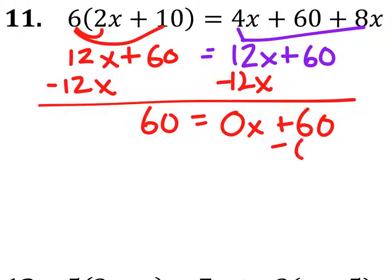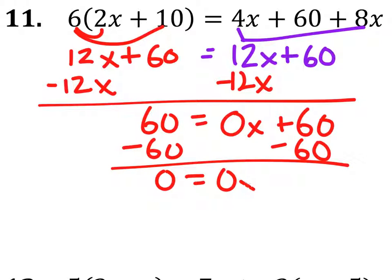Then we'd subtract 60 from both sides. And you'd get 0 equals 0x.